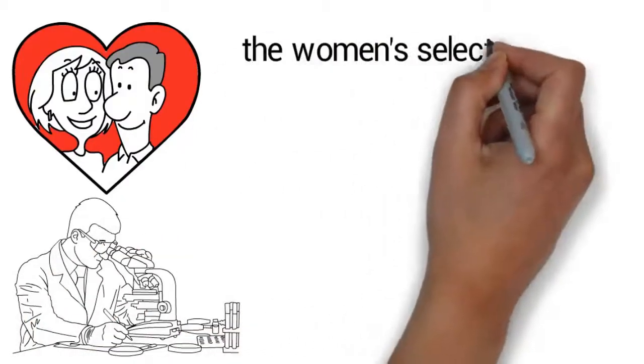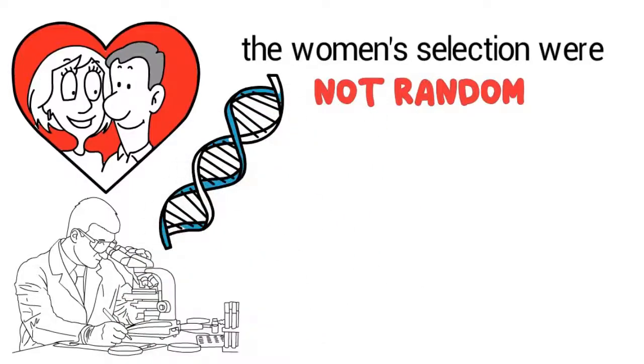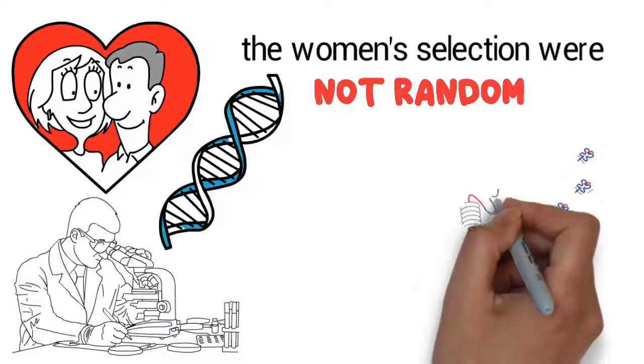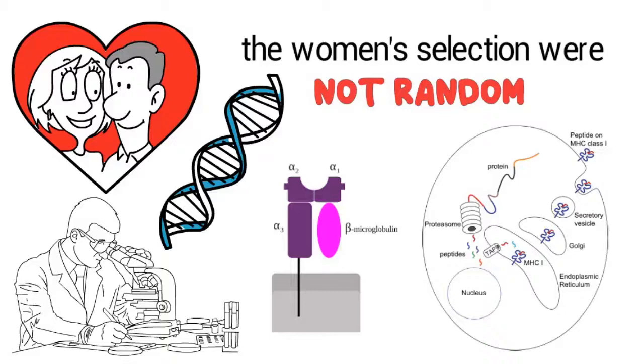The women's selections were not random. They were attracted to men with a genetic load composition, also known as Major Histocompatibility Complex, or MHC, which was very different from their own.